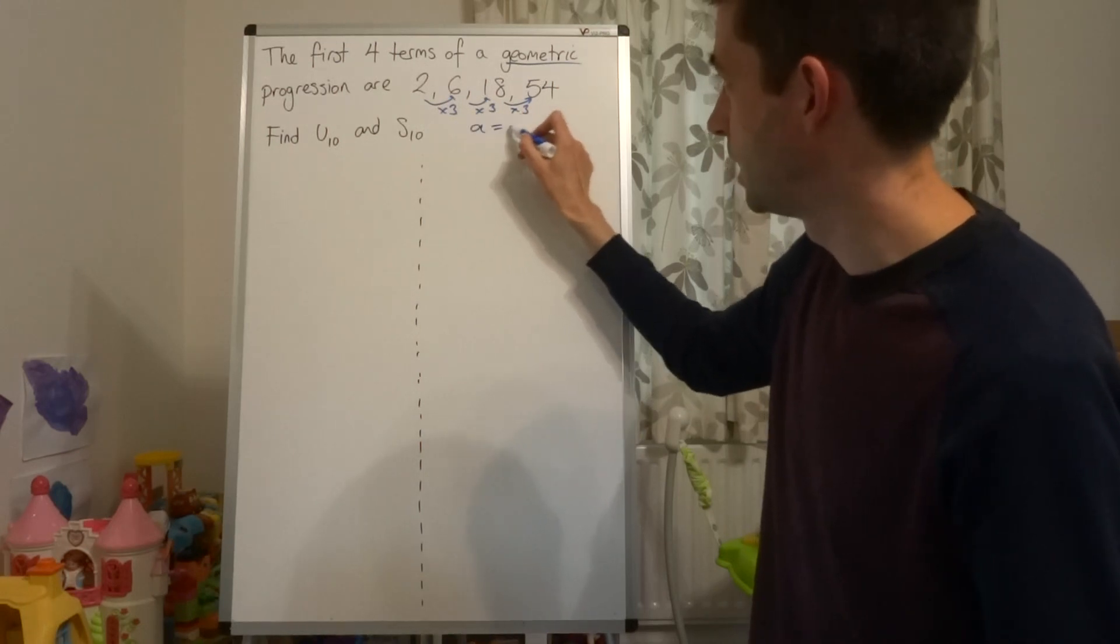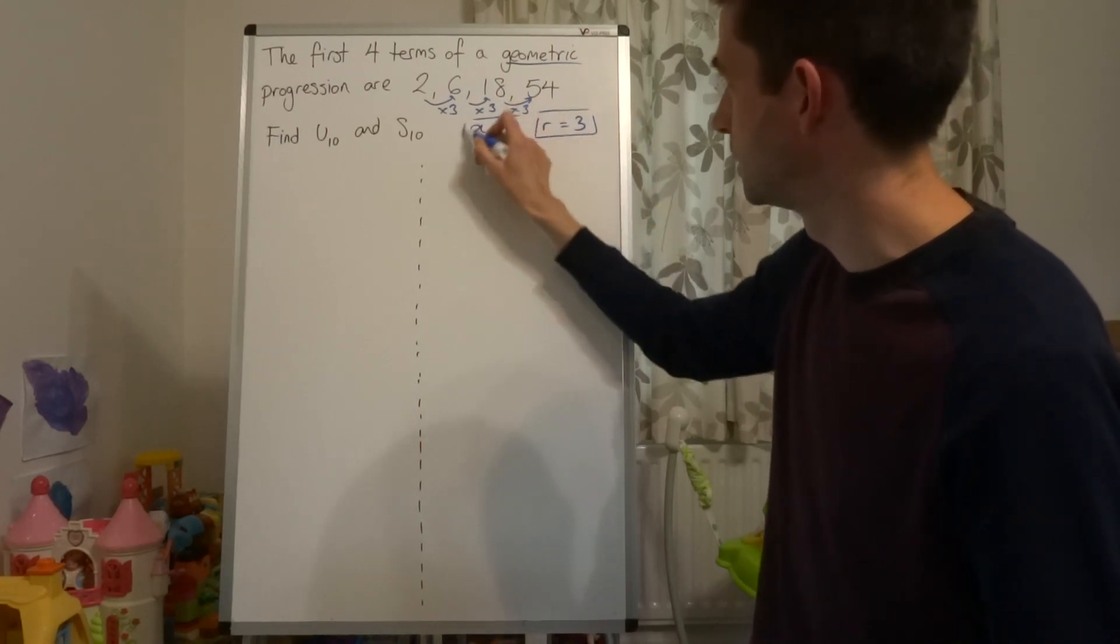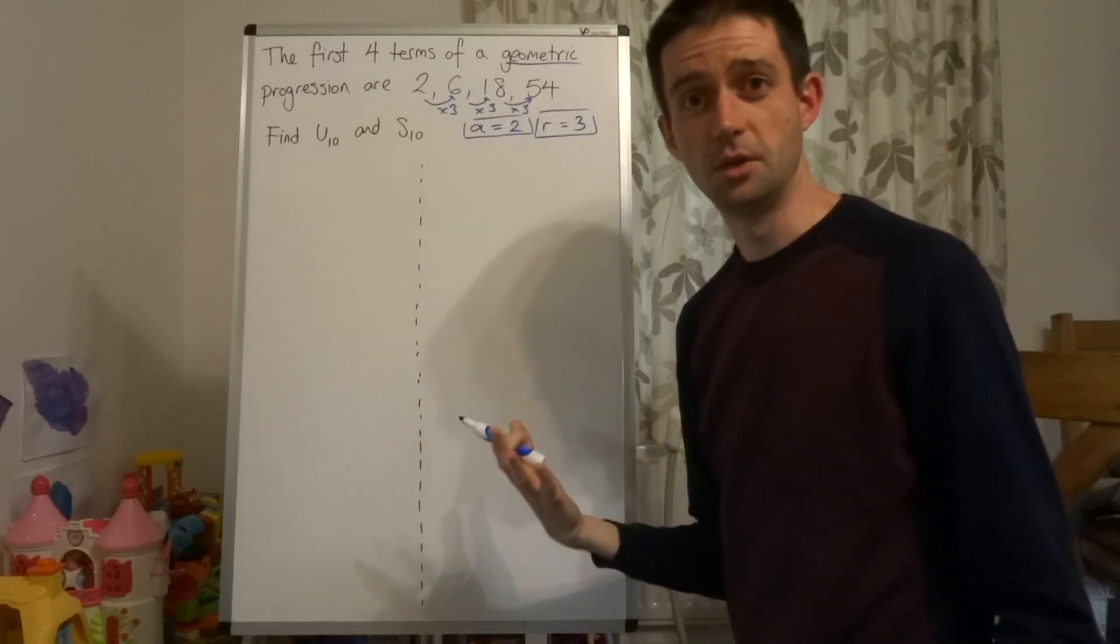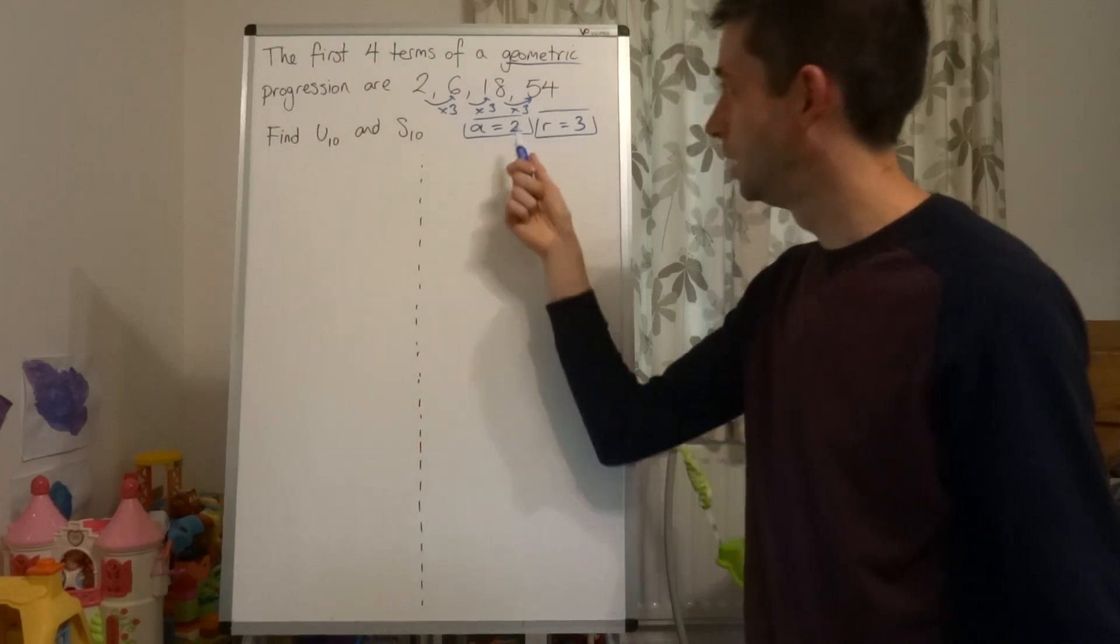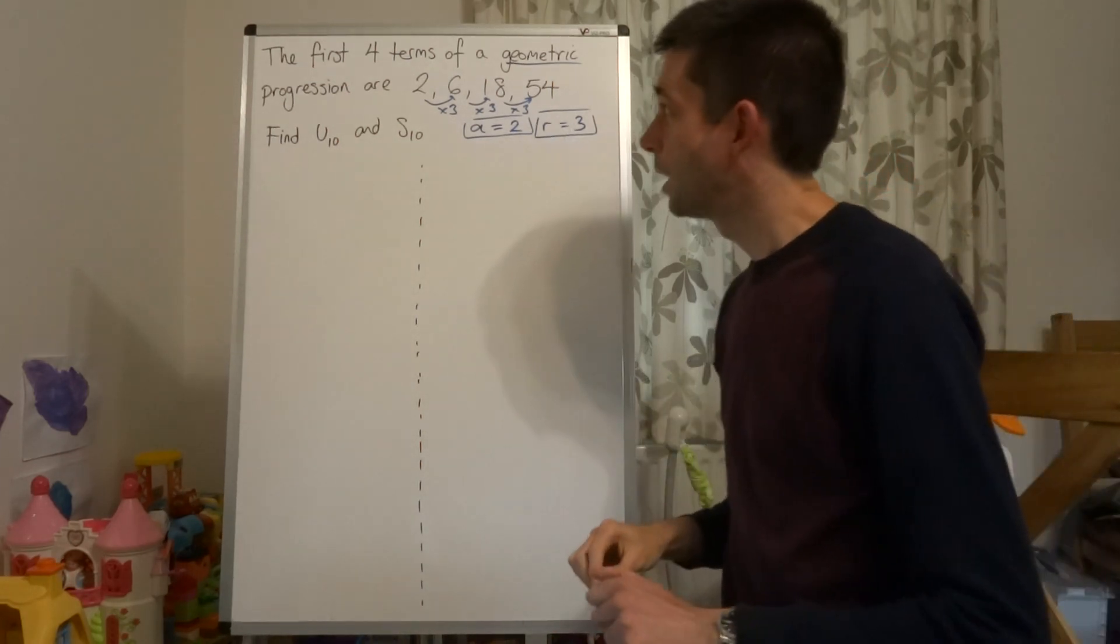So I'm going to write A equals 2 and R equals 3, and I'll box both those things because I'm going to be using them in my question. First term, common ratio.